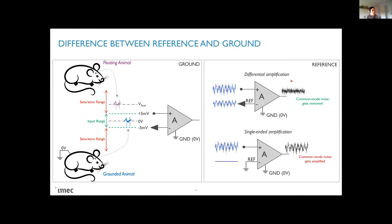So when you have a differential amplification, you will be able to cancel this common mode noise. But if you have a single ended, single ended means that you connect your negative reference or your negative input to ground. What you will have is that you will amplify all the common mode noise as well. So the best practice for referencing is always to use a reference that is not grounded.